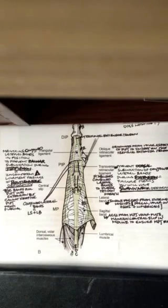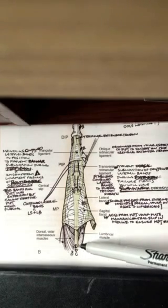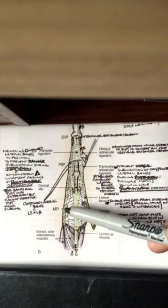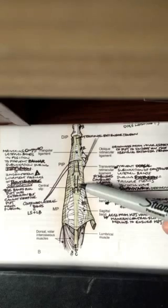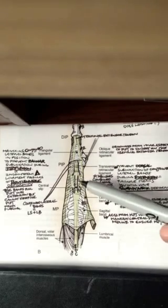Alright, so let's go ahead and start understanding the extensor mechanism because it's actually pretty tough. The extensor digitorum communis tendon comes down here on the dorsal aspect of the finger and crosses over the MP joint, which is the metacarpophalangeal joint. And right before it gets to the PIP joint, it actually splits into three pieces. It trifurcates.